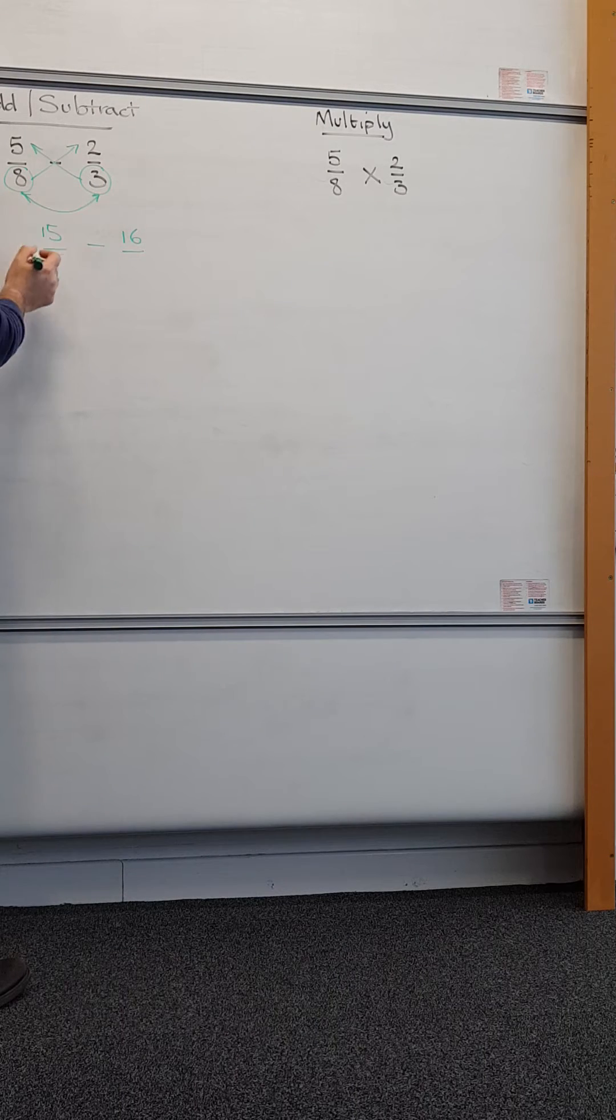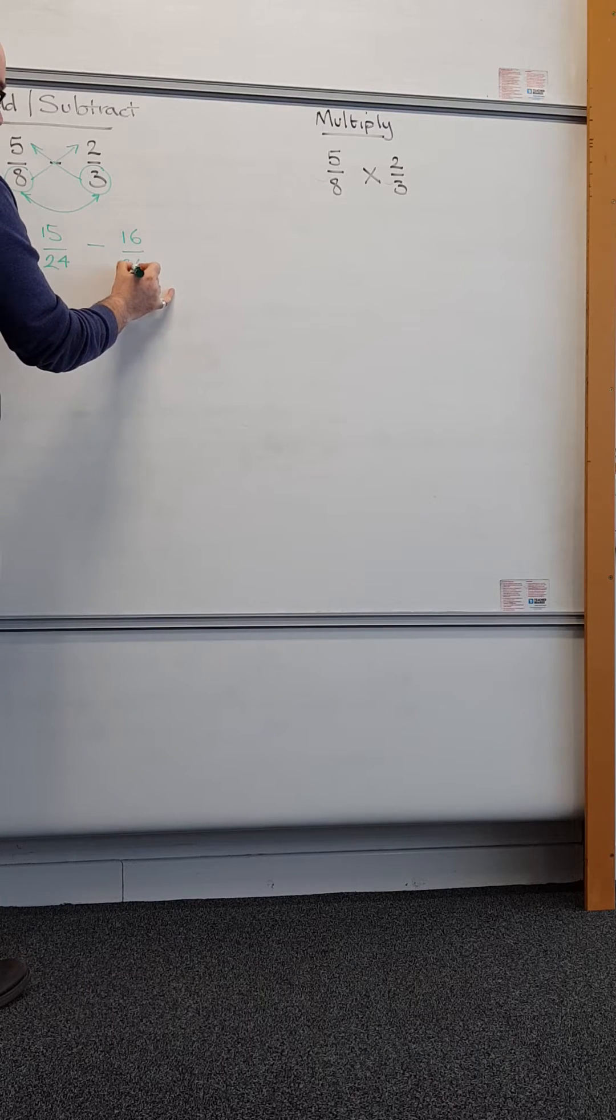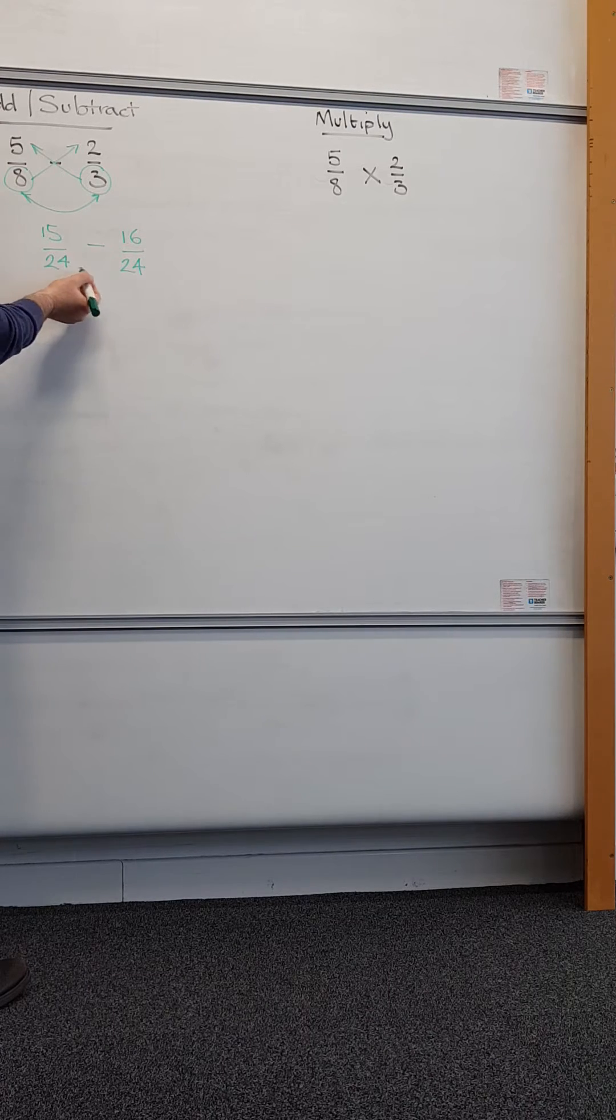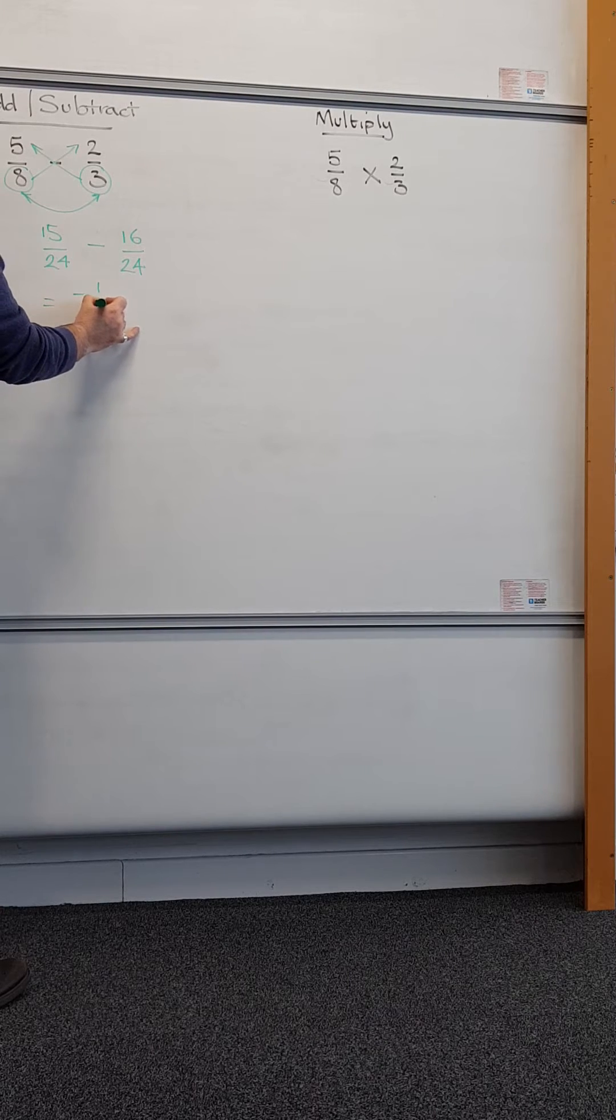And then the smile, multiplying the bottoms, so it's over 24. And because you now have denominators which are the same, you combine the tops in an appropriate fashion. In this case, I'm taking 16 away from 15, so that's going to be negative 1 over 24.